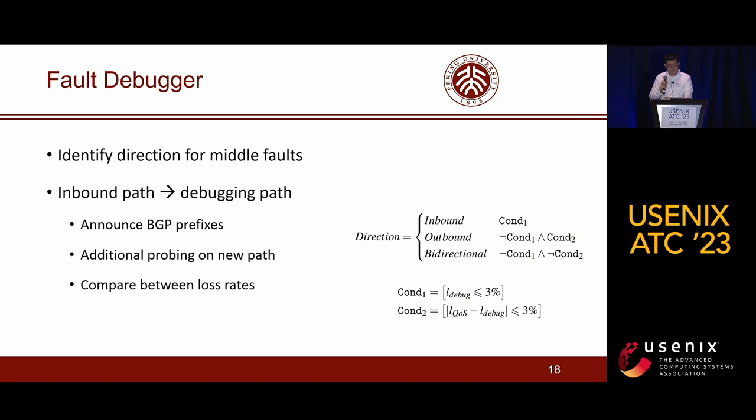If the packet loss rate on the new path is close to zero, it indicates an inbound fault. If the loss rate on the debugging path is lower than the original path but not close to zero, it indicates an outbound fault.